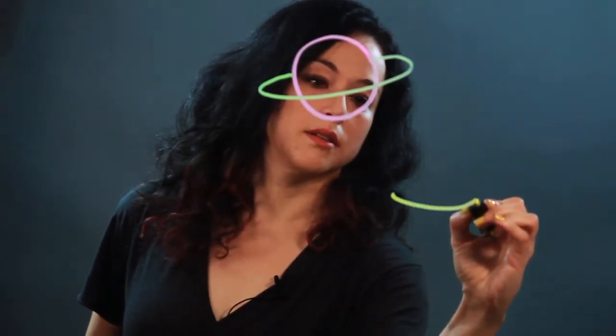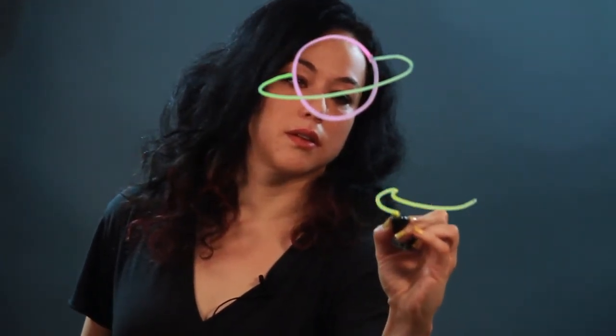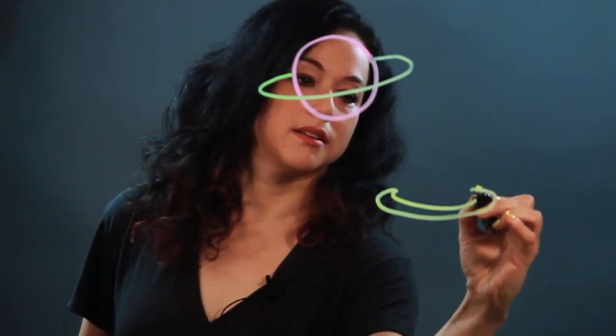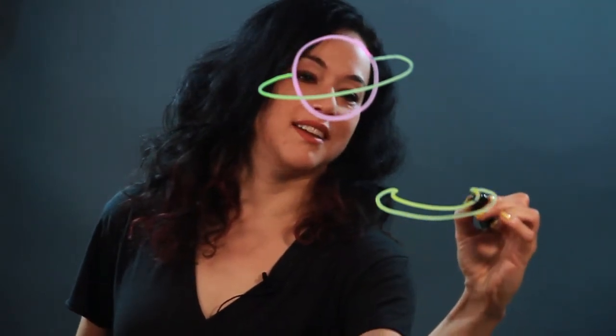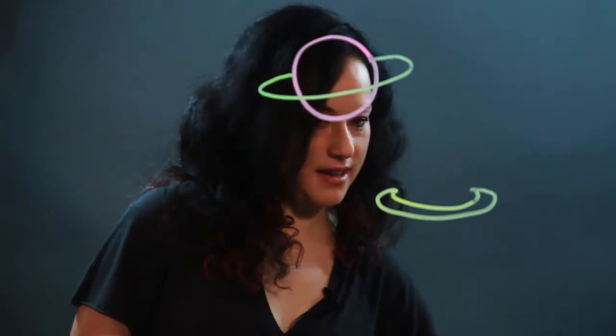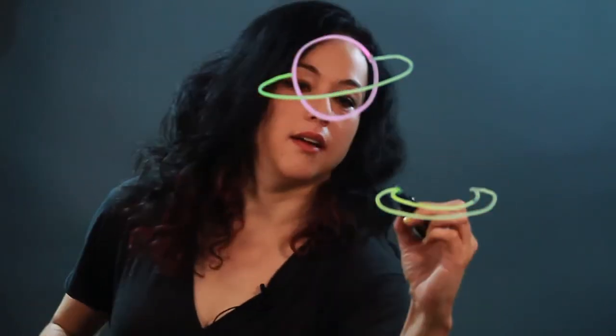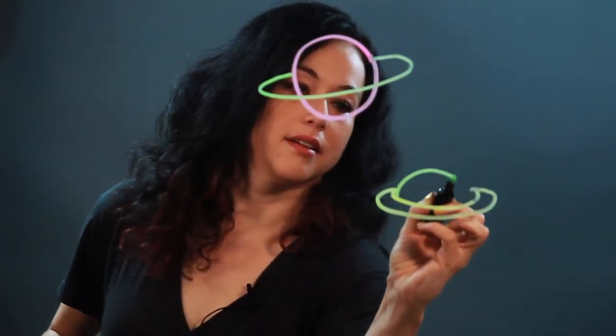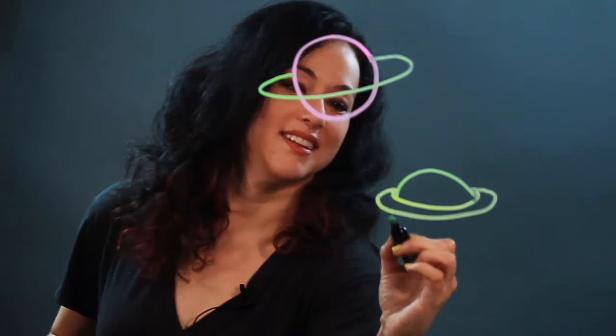Or if you wanted to, you could start with the rings and make a sort of crescent shape there, and then sort of add in the center of the planet.